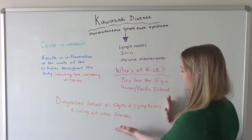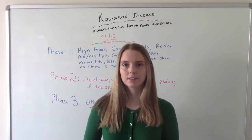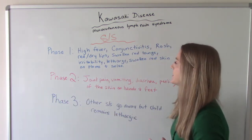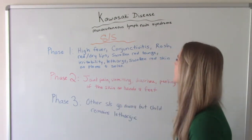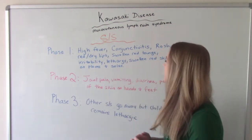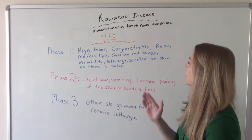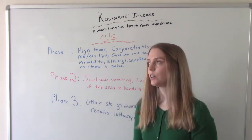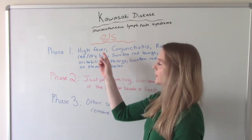The signs and symptoms are really significant and go through three phases. In the first phase, the patient will exhibit a high fever — greater than 102°F. They may also have conjunctivitis, a rash, red dry or cracked lips, a swollen red tongue (sometimes called a strawberry tongue), irritability, lethargy, and swollen red skin especially on the palms of their hands and the soles of their feet. This fever typically lasts for several days.